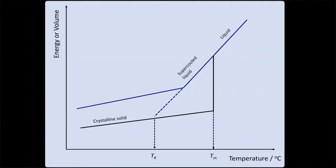If you've watched some of my other videos on amorphous materials — and if you haven't, the links are in the description below — then you'll know that I like to use a plot of energy or volume versus temperature to explain how glasses are formed. In previous videos, I've kept the graph relatively simple and depicted the glass transition as being a sharp discontinuity, like this.